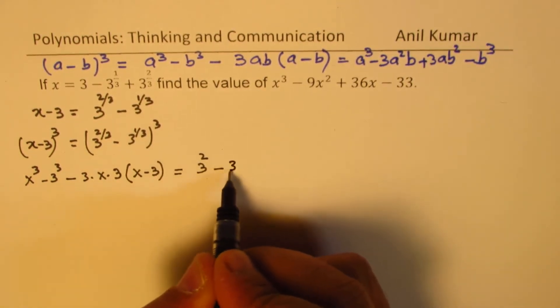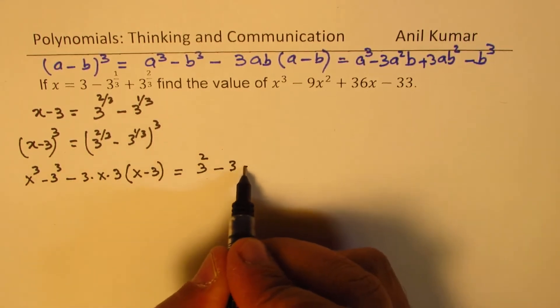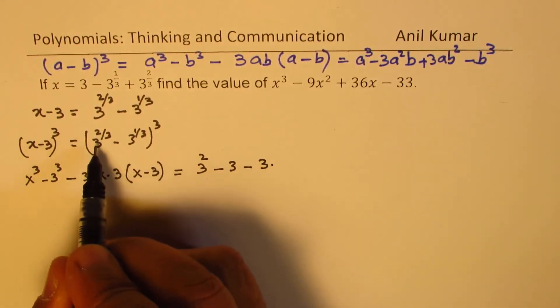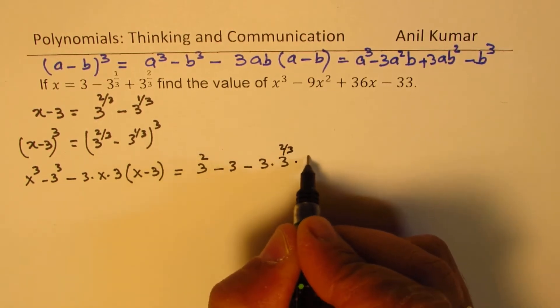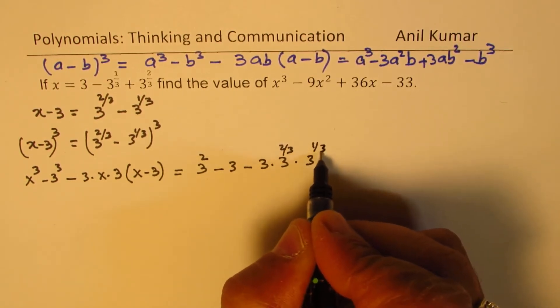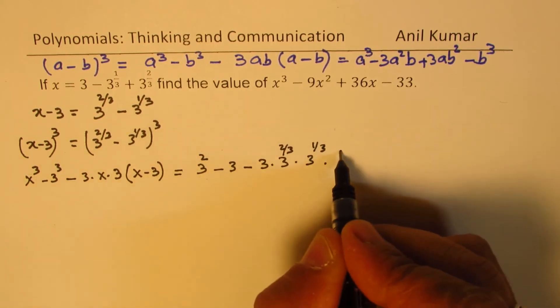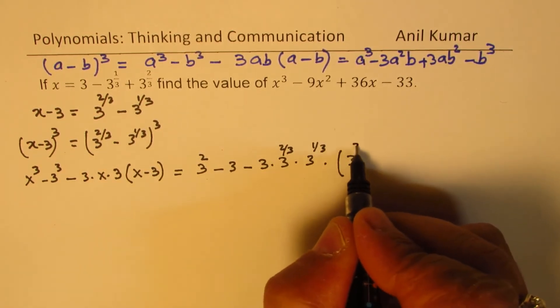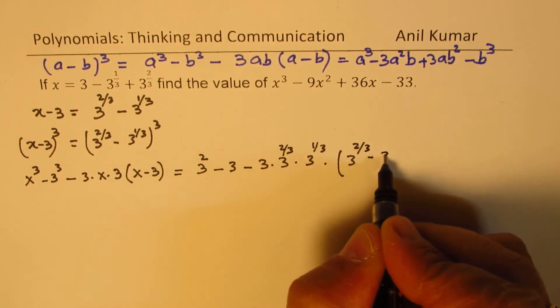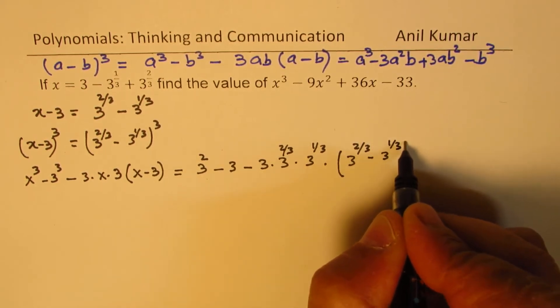cube of this will give you 3 minus 3 times these terms, which is 3 to the power of 2 over 3 times 3 to the power of 1 over 3. Within brackets, we get this difference, which is 3 to the power of 2 over 3 minus 3 to the power of 1 over 3.